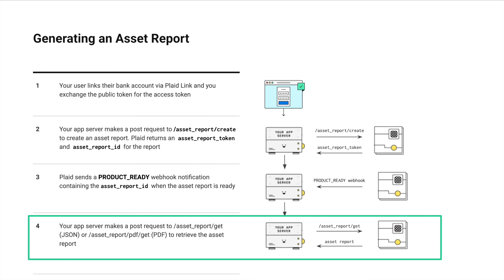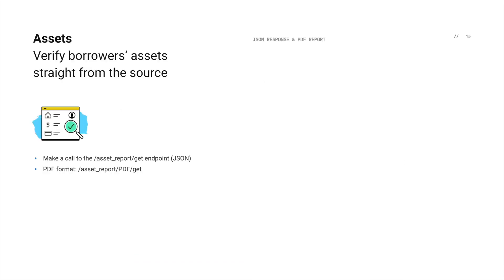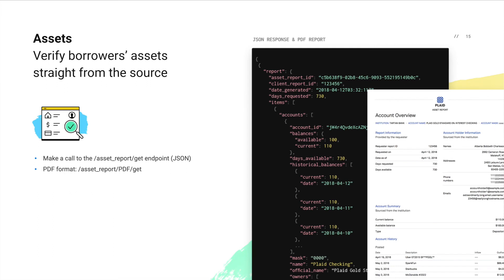Now we're at the final step where the asset report is ready to retrieve. Simply call the asset report get endpoint to fetch the asset report in JSON. Alternatively, you can also call the asset report PDF get endpoint to retrieve a more human-readable PDF version. And that's it — we've now covered the entire integration and you're ready to evaluate a loan application.